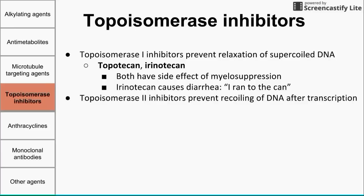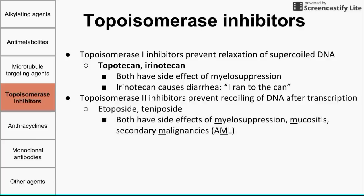Topoisomerase 2 inhibitors prevent the recoiling of DNA after transcription. Two to remember are etoposide and teniposide, both ending in '-oside.' Side effects of topo-2 inhibitors include myelosuppression, mucositis, and secondary malignancies such as AML — acute myeloblastic leukemia. These are the three Ms associated with topo-2 inhibitors such as etoposide and teniposide.